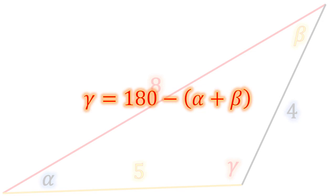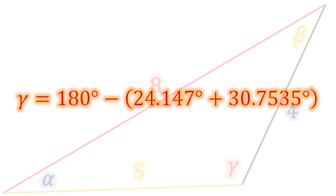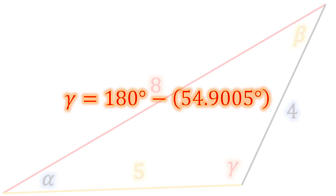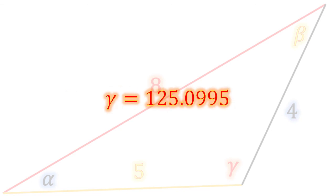Finally, our gamma is easy, 180 minus alpha and beta summed. Okay, so when we add in all of our angles, we wind up with 180 minus 54.9005 degrees, and gamma finally is 125.0995 degrees.